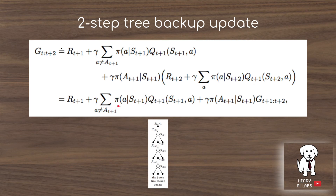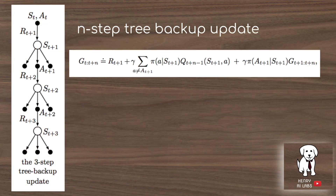The two-step tree backup update computes the expectation as the probability of each action given the state times its Q value, then adds this weighted by the likelihood of that next action under the behavior policy. At each intermediate state, we take the expectation over available actions weighted by their target policy probabilities, while the overall transition is weighted by the behavior policy. We generalize tree backup from two-step to n-step by recursively adding the return from T+1 up to T+n, continuously taking expectations over target policy actions at each state.